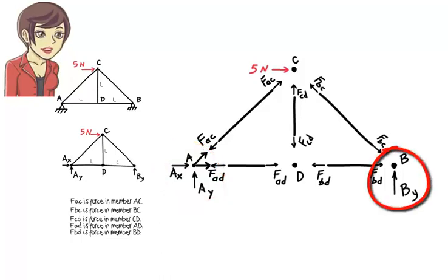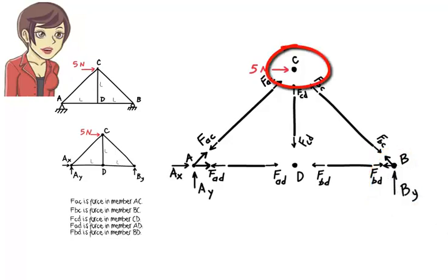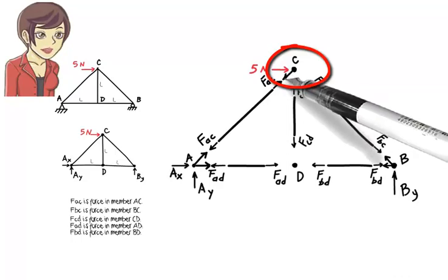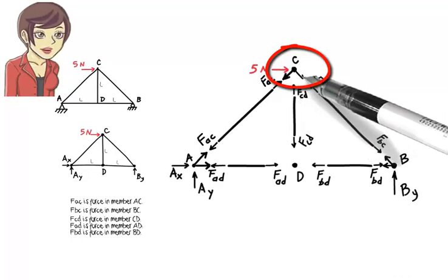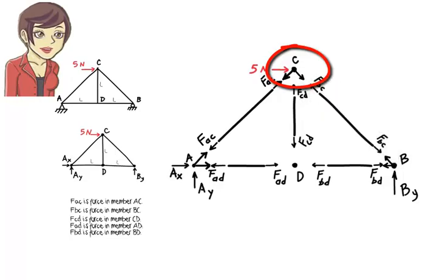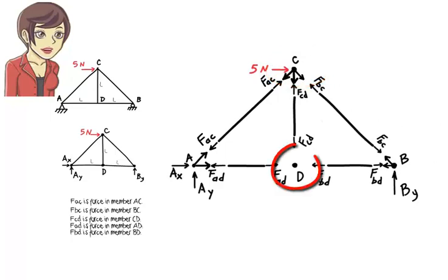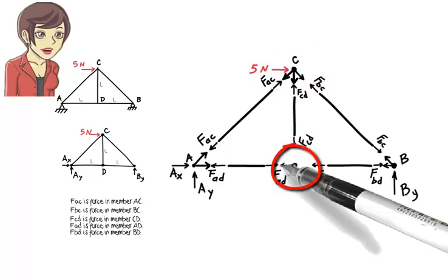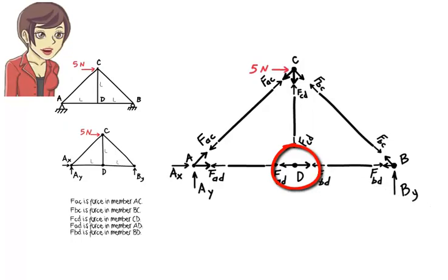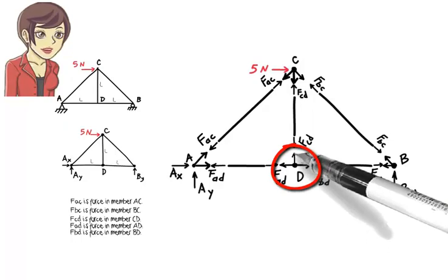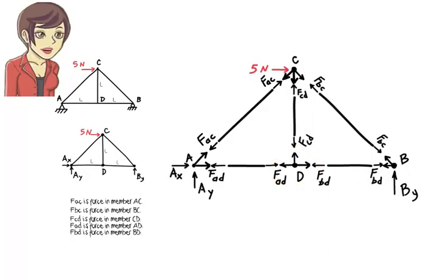At joint B, there are two member forces: the force in member BC and the force in member BD. Joint C has three member forces acting on it: the force in member AC, the force in member BC, and the force in member CD. At joint D, there are three member forces: FAD, FBD, and FCD. Now we have the complete free body diagram for each segment.